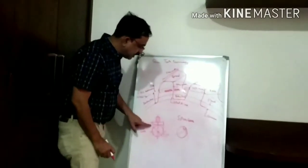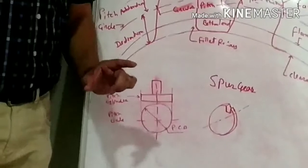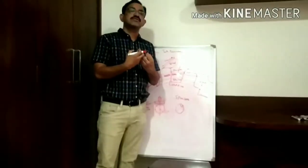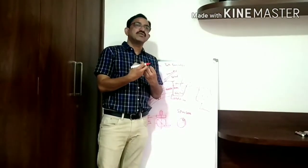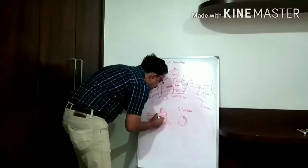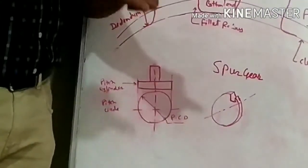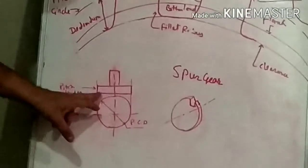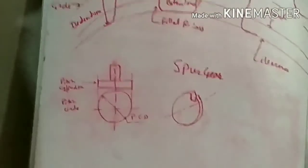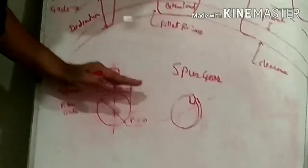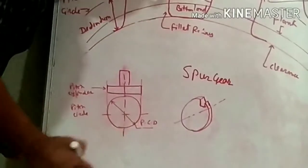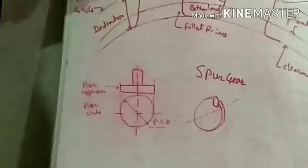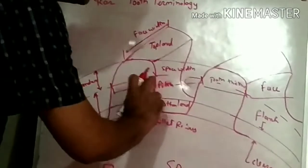Now the first gear terminology is the pitch cylinder. Pitch cylinder means it is the imaginary friction cylinder. When there is engagement between two gears, there is contact and friction between the mating teeth. The pitch cylinder is the imaginary friction cylinder which rolls without slipping — since the gear is a positive drive element, there is no slippage. When we use a cutting plane perpendicular to the axis of the gear, the resultant section becomes a circle, known as the pitch circle, and the diameter of this circle is known as the pitch circle diameter.